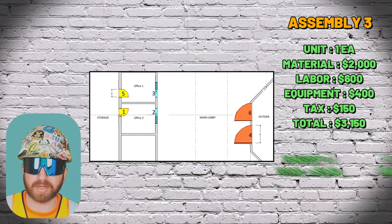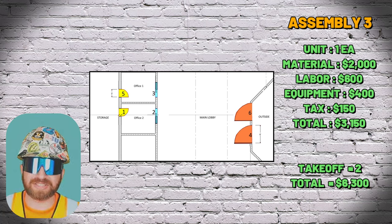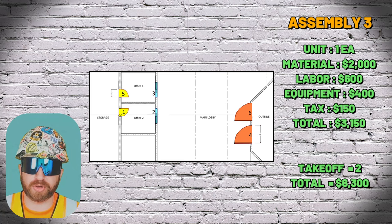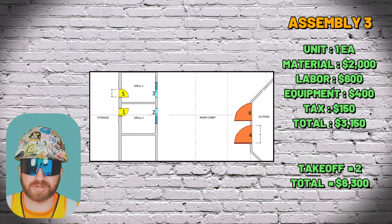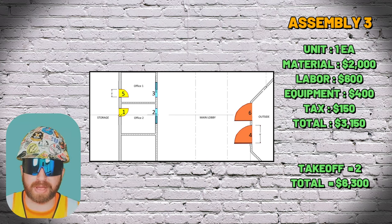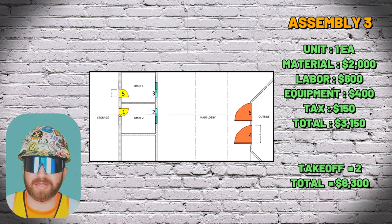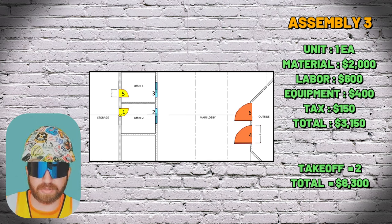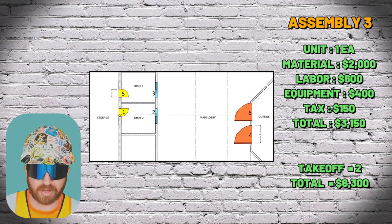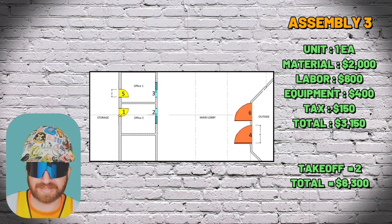As an estimator, you repeat this process for any items included in your scope. These are more complex softwares used because the estimate turns into a tracking means for project managers down the road — but you don't have to use them. You can set up equations in Excel to do the same thing. You're not going to estimate every square foot of the building separately; you take one square foot and multiply it by how many square feet you have of that same material.